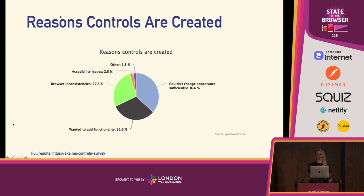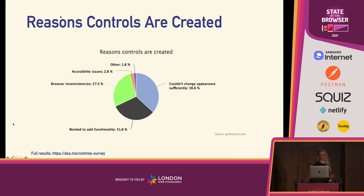He wanted to know why developers were rebuilding controls from scratch. Over a third said it was because they couldn't change the appearance sufficiently. Another third just wanted to add functionality — they wanted to extend their control. And just under a third said it was because of browser inconsistencies, which we can probably assume has to do with appearance. If we lump that in with the first group who said it was because they couldn't change the appearance sufficiently, that's two thirds of developers spending all of this time recreating controls just for appearance.